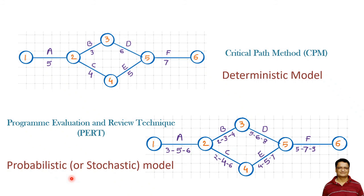It takes into account the uncertainty involved in the activities. This type of model is useful where uncertainties are involved. I hope that with this example, you have a clear idea about what we mean by deterministic models and what we mean by probabilistic or stochastic models. Thank you.